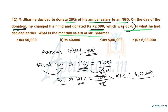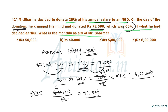So the monthly salary of Mr. Sharma equals annual salary 6,00,000 divided by 12, which is 50,000 rupees. Option A — 50,000 rupees — is the correct answer.